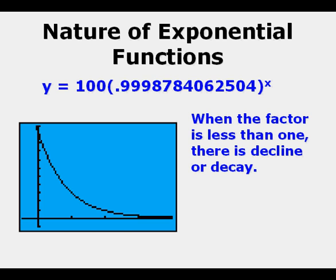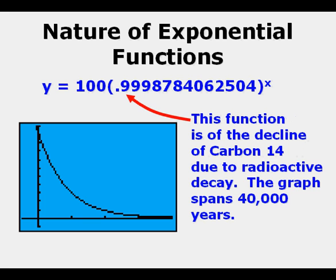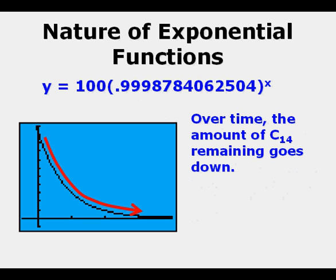When the factor or base is less than 1, there is decline or decay. This function is of the decline of carbon-14 due to radioactive decay. The graph spans 40,000 years. Over time, the amount of carbon-14 remaining goes down as it gradually goes back to become the more stable nitrogen.